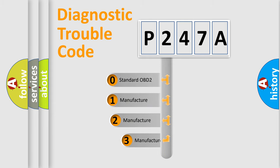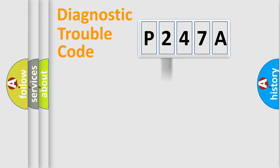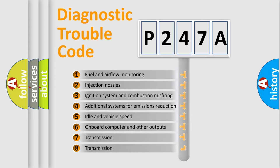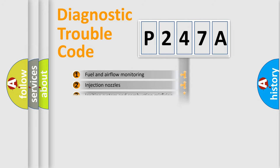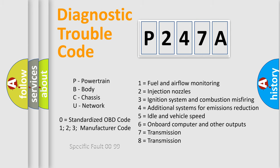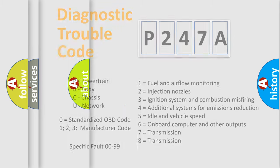If the second character is zero, it is a standardized error. In the case of numbers 1, 2, or 3, it is a manufacturer-specific error. The third character specifies a subset of errors. The distribution shown is valid only for the standardized DTC code. Only the last two characters define the specific fault of the group. Let's not forget that such a division is valid only if the second character code is zero.